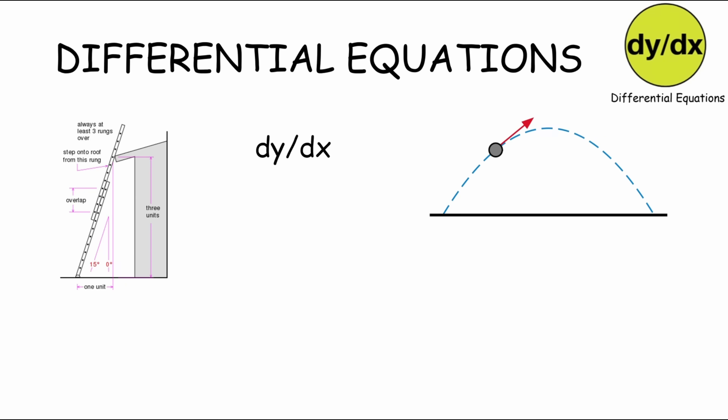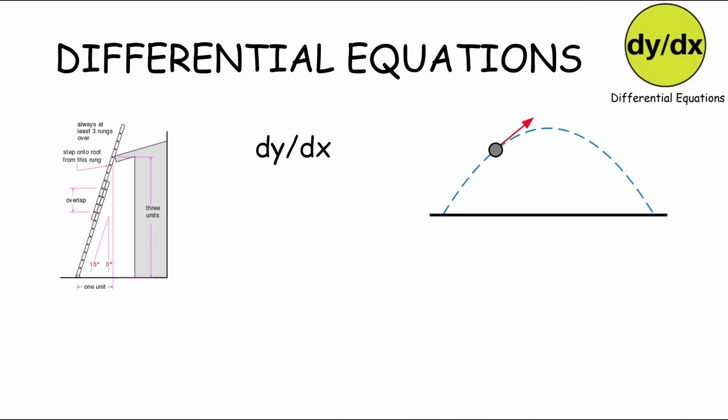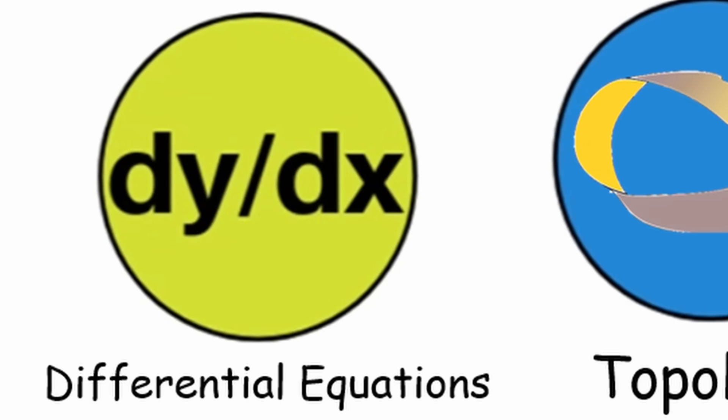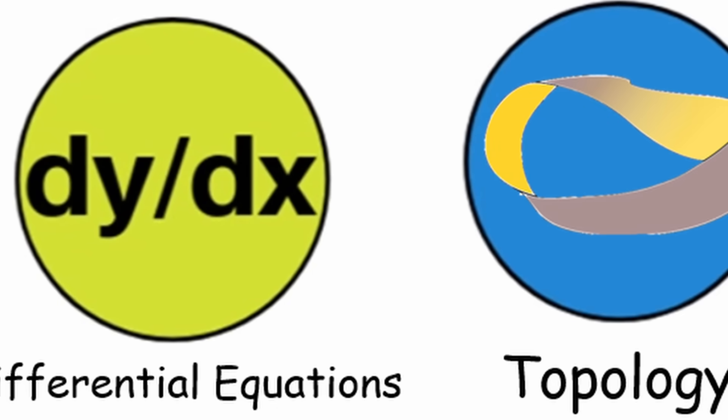Imagine a ladder leaning against a wall and sliding down. The angle between the ladder and the ground changes as it falls. You can use this equation to figure out the speed the ladder falls at.